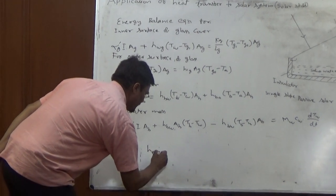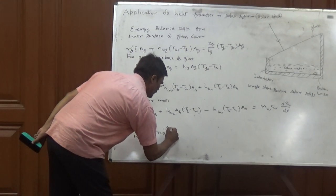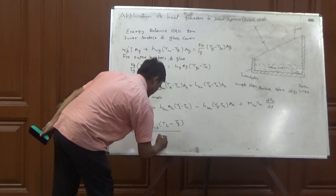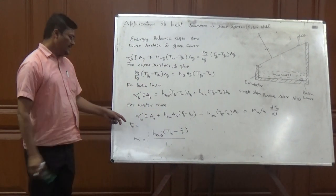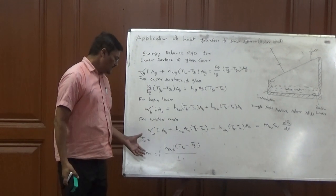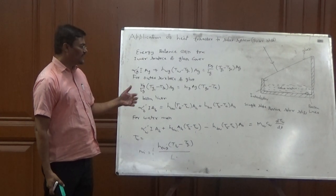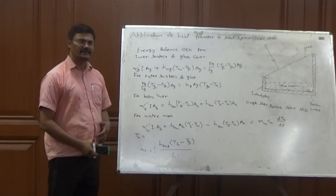That is, HWG into TW minus TGI upon L. L is the latent heat of water. Once we have calculated the amount of water evaporating, the amount of water coming from the system, we can go for the further analysis. Thank you.